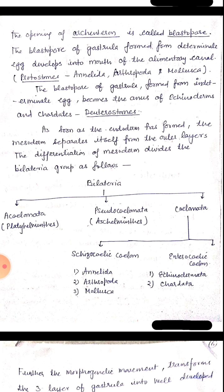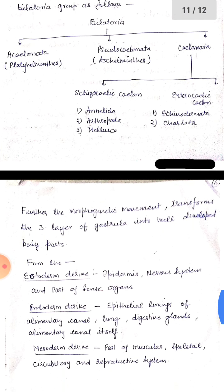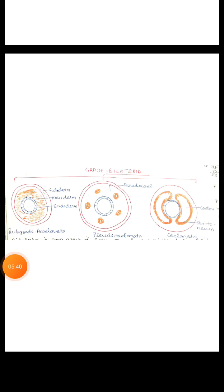As soon as the endoderm has formed, the mesoderm separates itself from the outer layer. The differentiation of mesoderm divides the bilateria group as follows. On the basis of mesoderm differentiation, the bilateria group is divided into acoelomate, pseudocoelomate, and coelomate. True coelomate animals are again divided into schizocoelic and enterocoelic coelom.